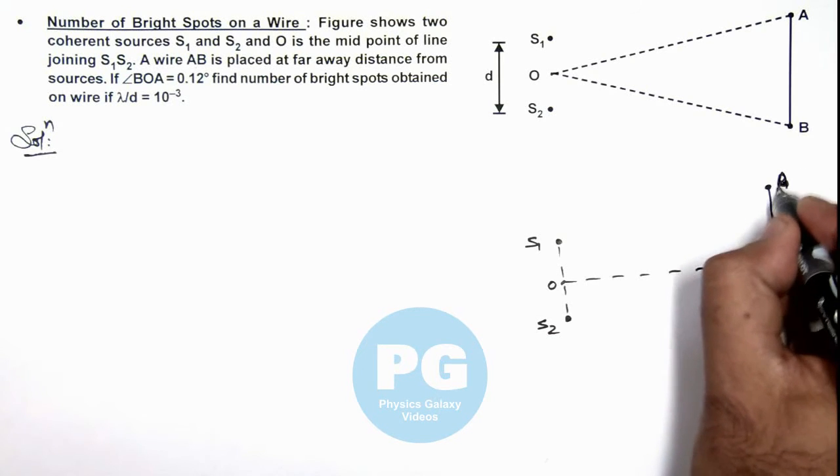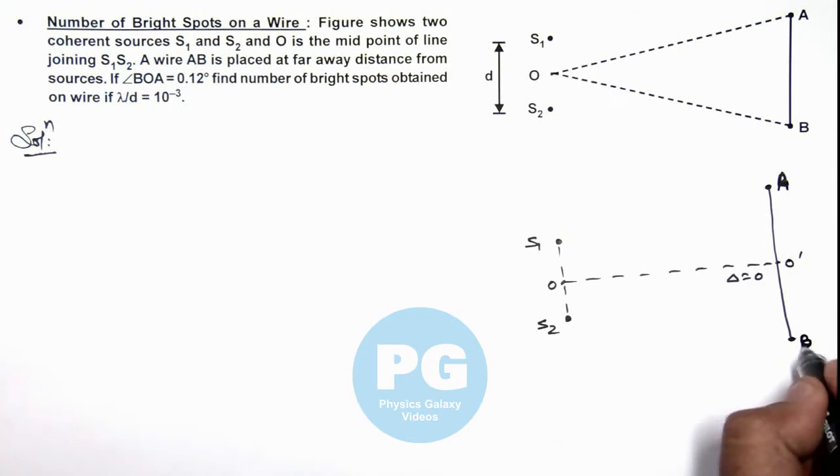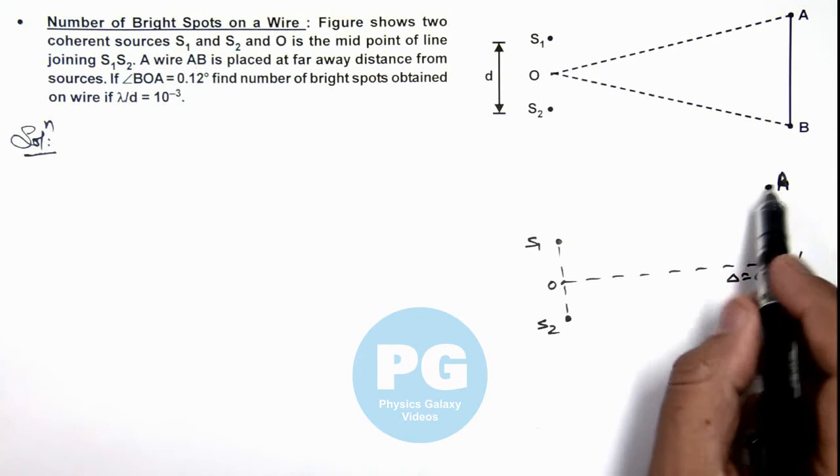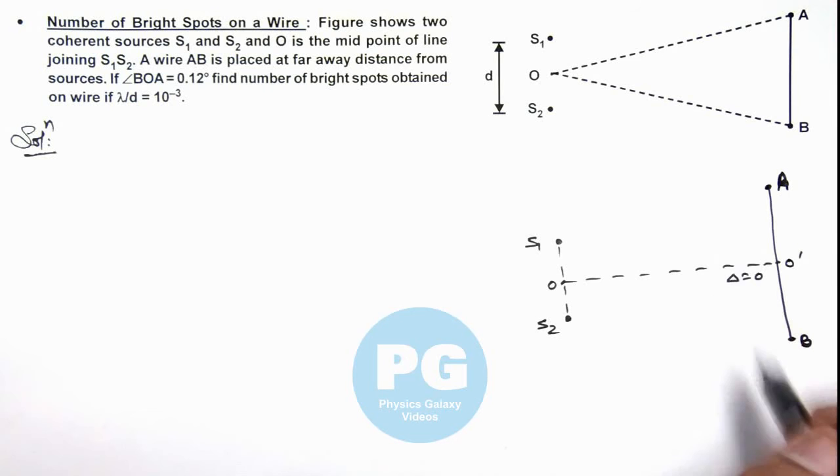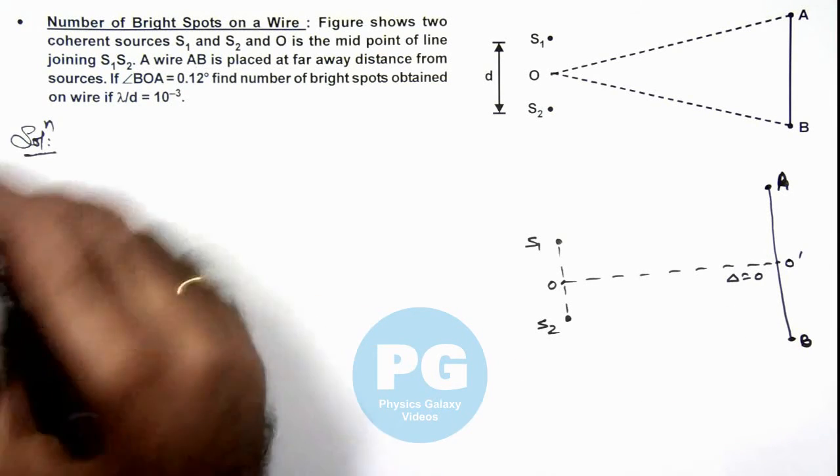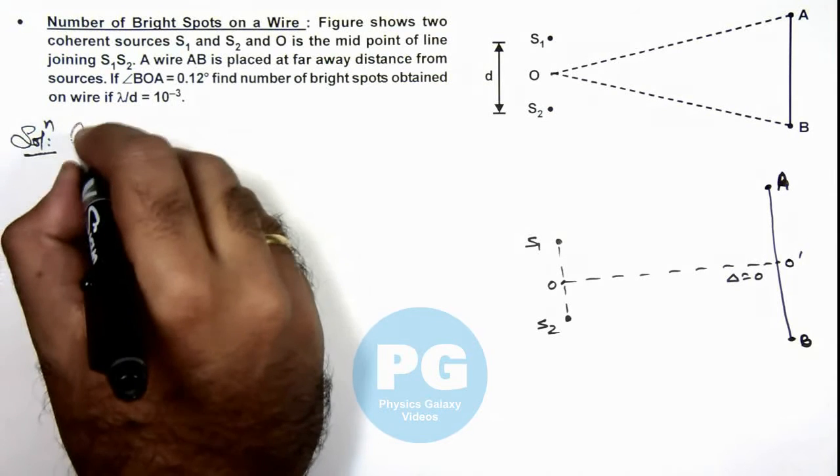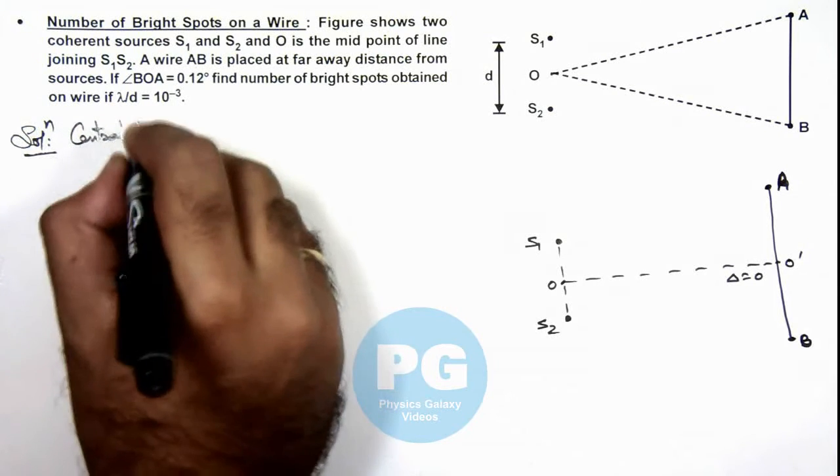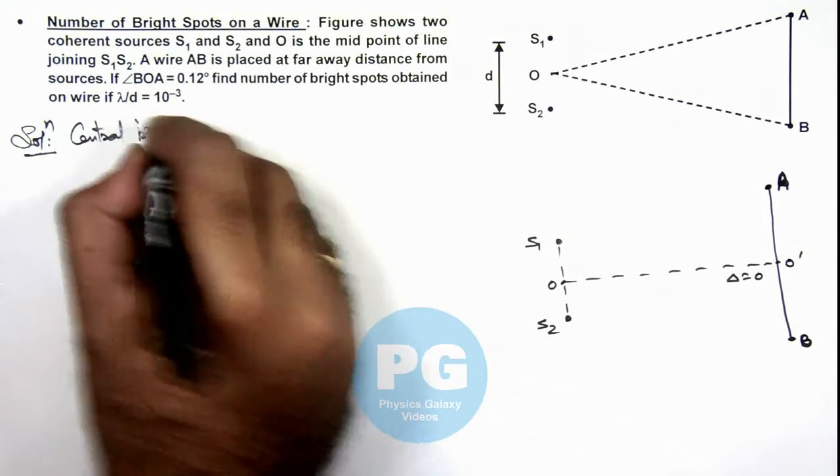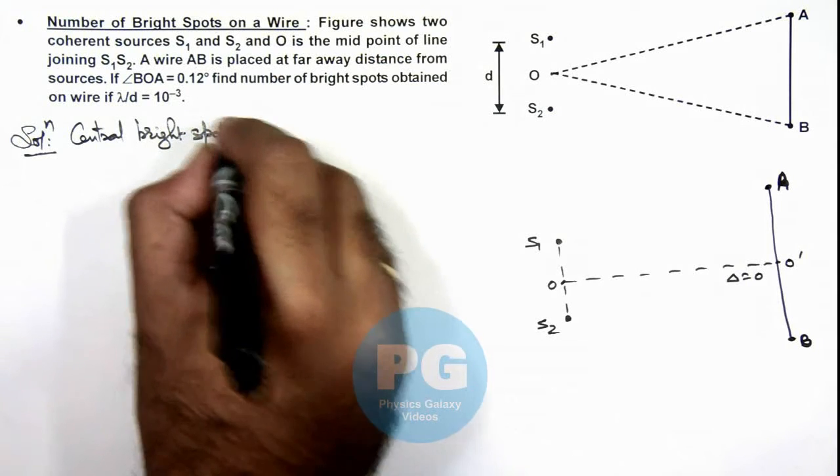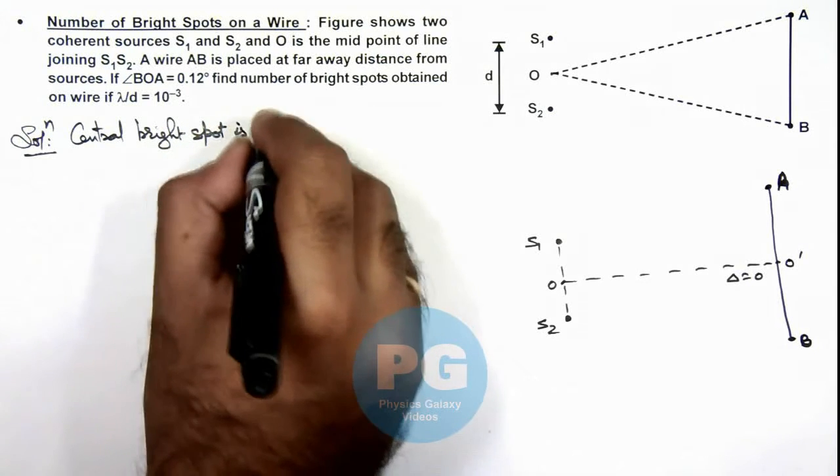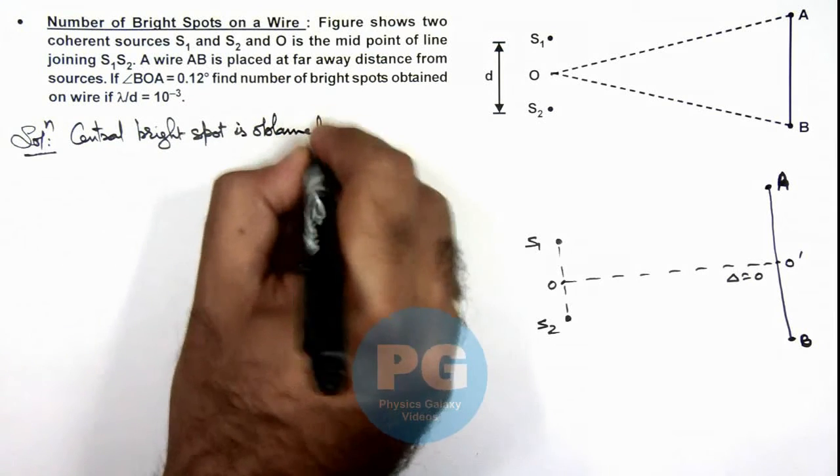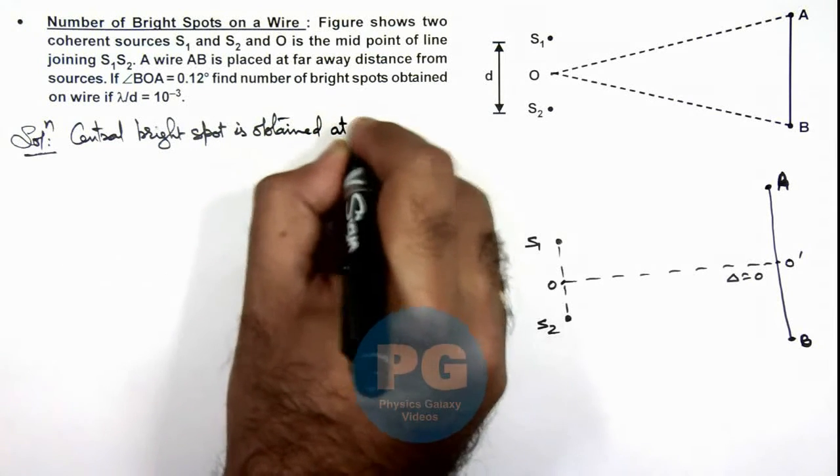And in this situation, if we wish to calculate other points then we can first find out point A as well as point B, the path difference correspondingly. So here we can write, first the central bright spot is obtained at O'.